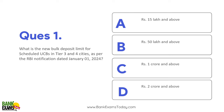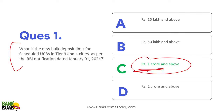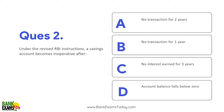What is the new bulk deposit limit for scheduled urban cooperative banks in tier 3 and tier 4 cities? Jab aap FD karane jaate ho bank mein, there are different interest rates based on amount. Bulk deposit ki jo limit hai urban cooperative banks in tier 3 and tier 4 cities - it is 1 crore and above. 1 crore rupee limit kar di gayi hai from 1st of January 2024. It's an important question.